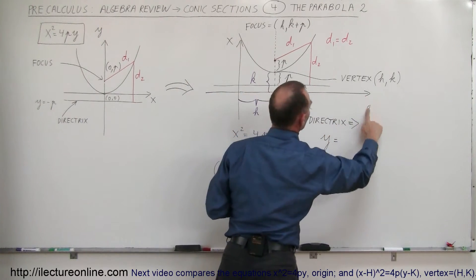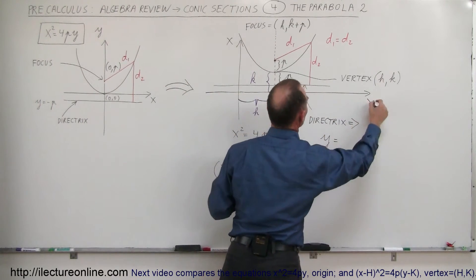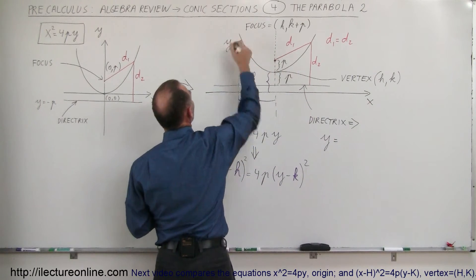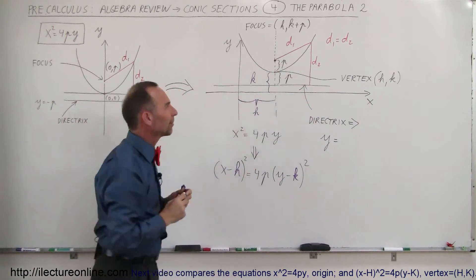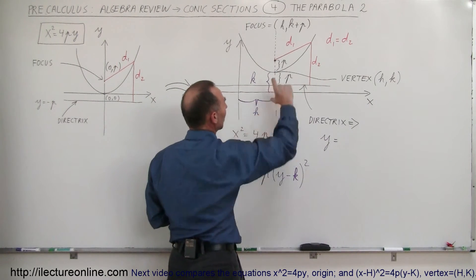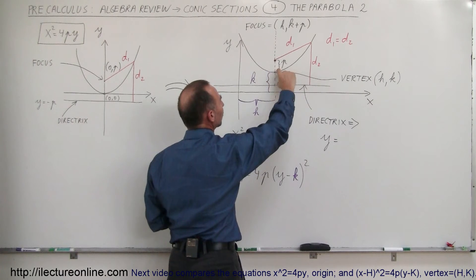Oops, I got this wrong here. This should be the x-axis, and this should be the y-axis. That happens sometimes, got to be careful. Anyway, it is this distance above the x-axis, so that would be equal to k minus p, that will give you this distance right here.